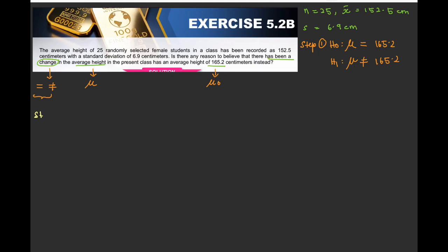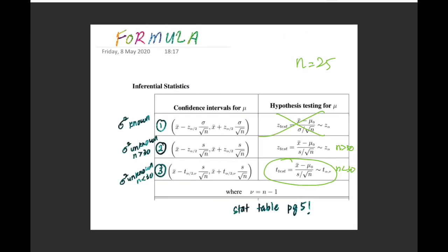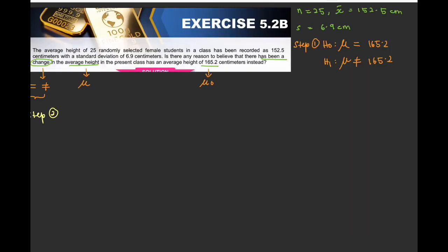Step number 2. The test statistic. So which formula that you want to use. So look at here. Can we use formula number 1? No. Cannot. Because sigma is not given. Can we use formula number 2? No. Because the n is less than 30. So we can use formula number 3. So the formula is.